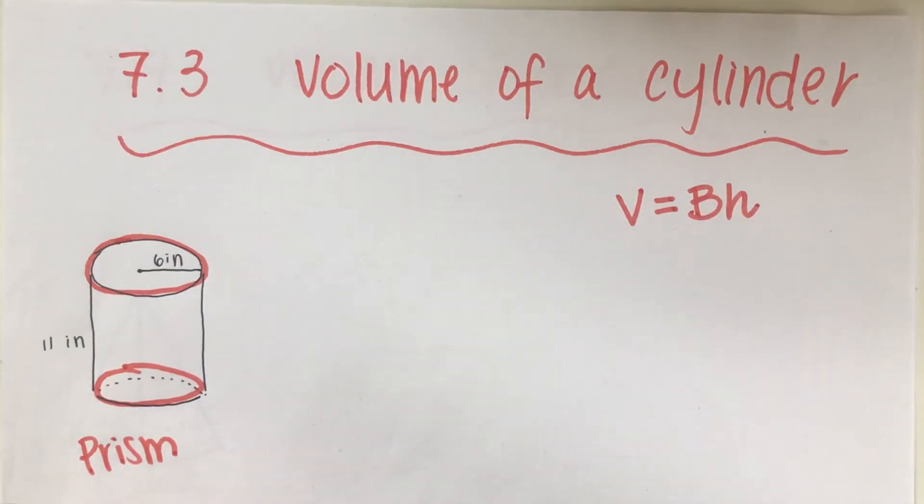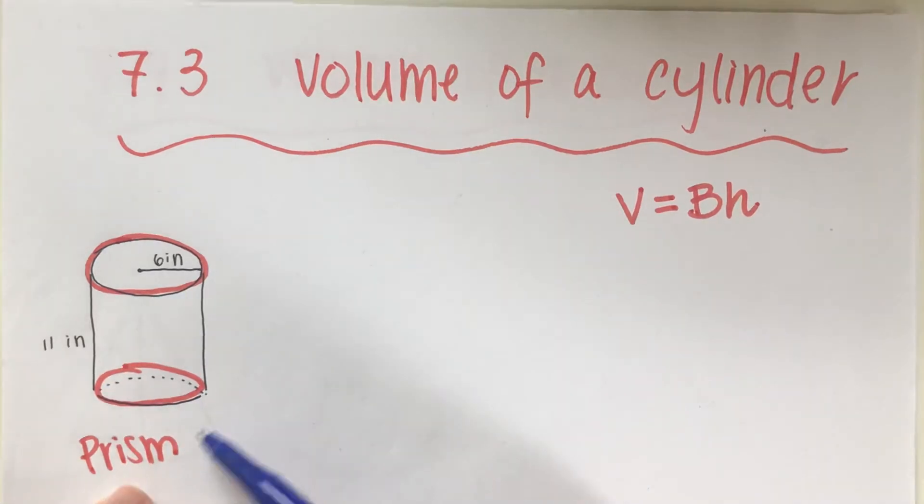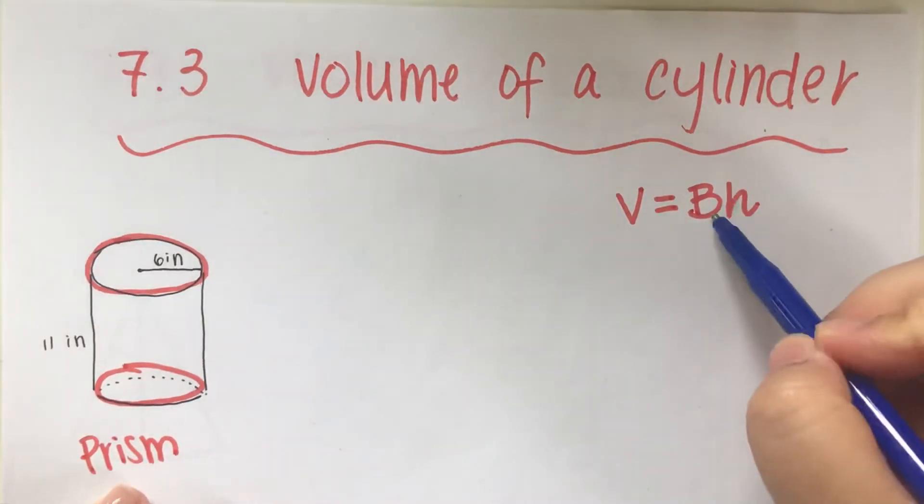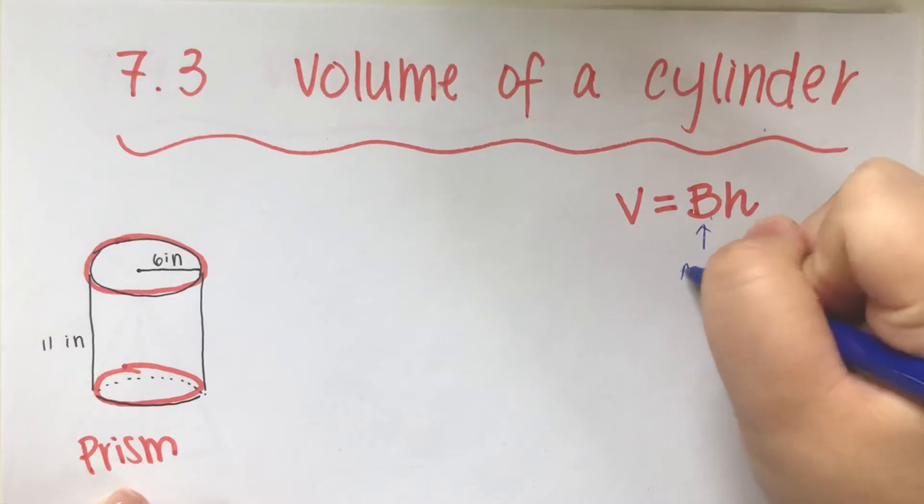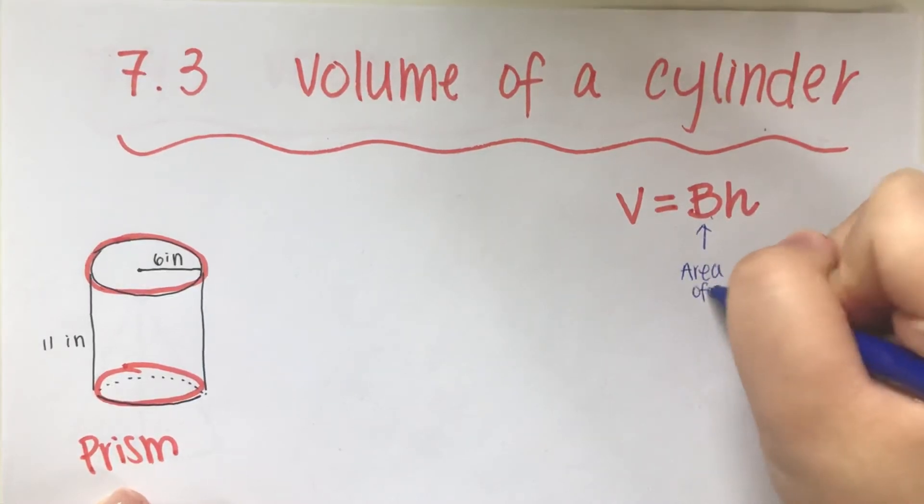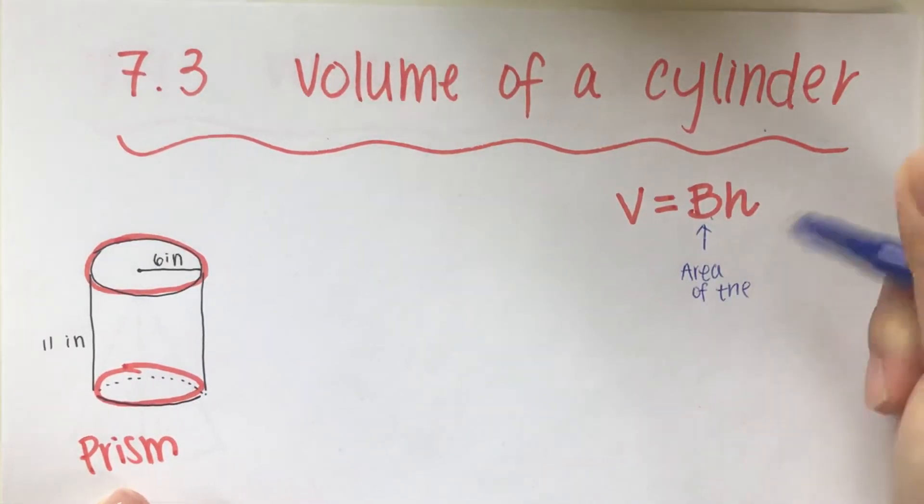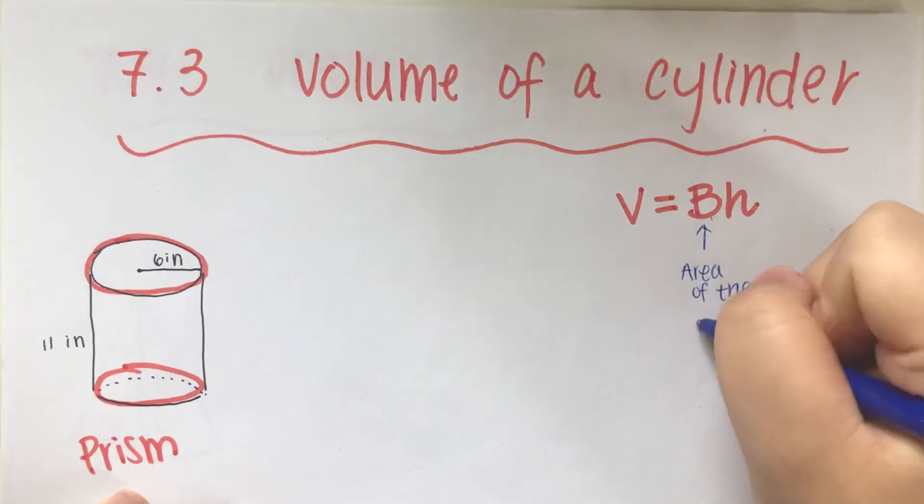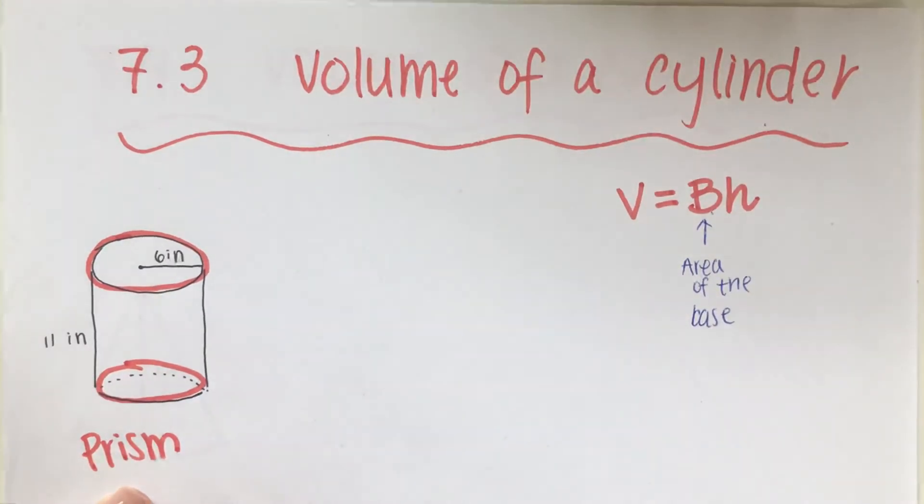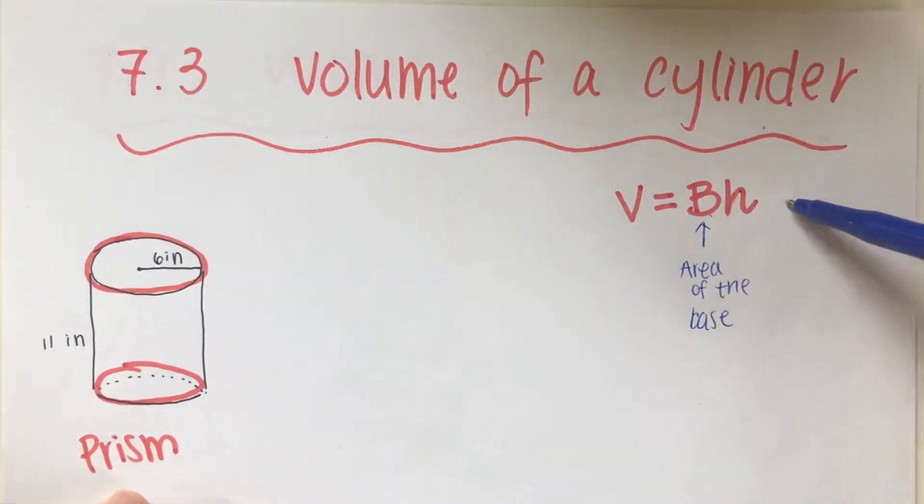So now let's get to it. In order for me to find the volume of a cylinder, which is a type of prism, I need to find the area of the base. Now a lot of students try to memorize the formulas—it's given—but if you know area of the base multiplied by the height, you should be good with all kinds of prisms.